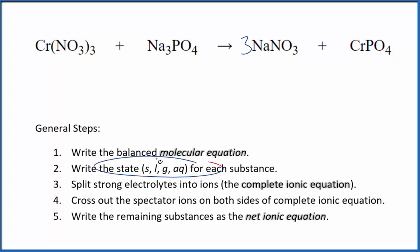Now we need to write the states for each substance, and it looks like this. If you know your solubility rules, nitrates are very soluble, so they're going to be aqueous, and compounds with phosphate, in general, they're insoluble.